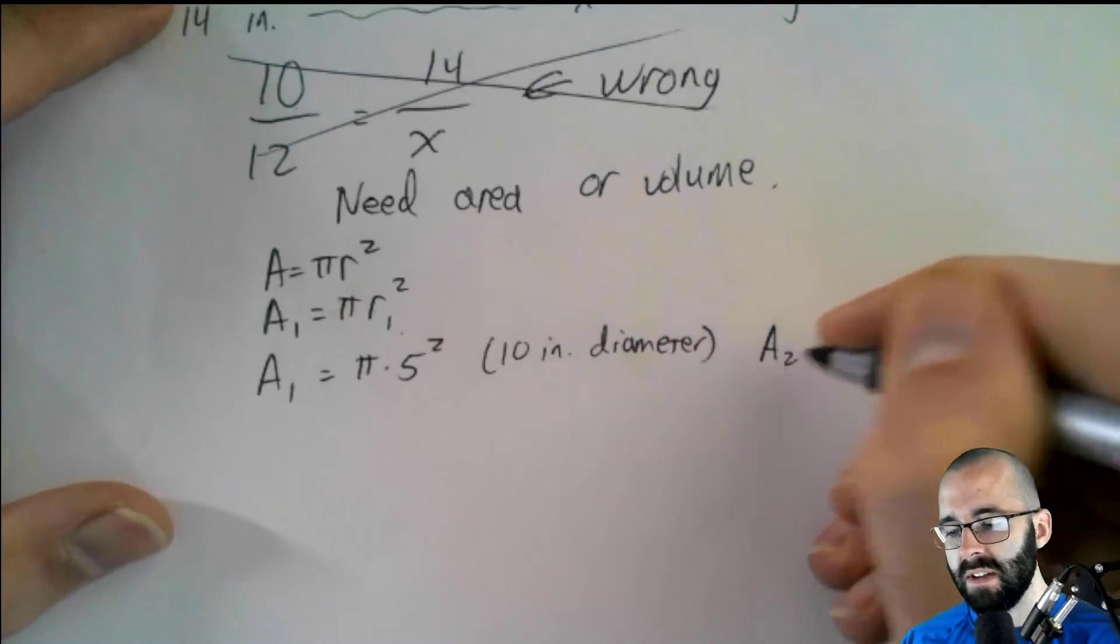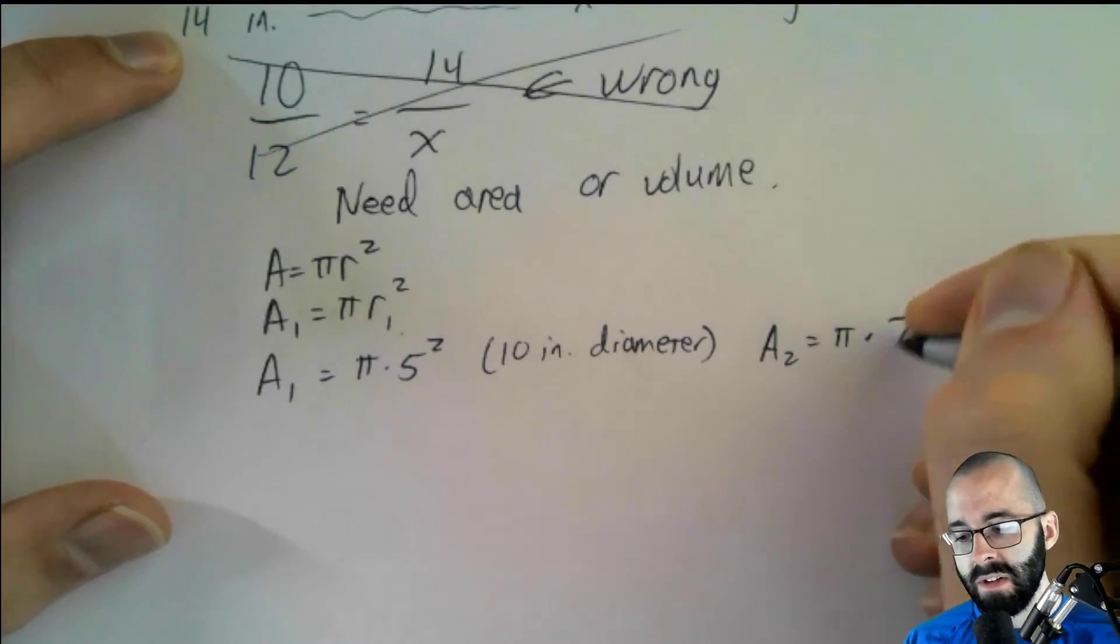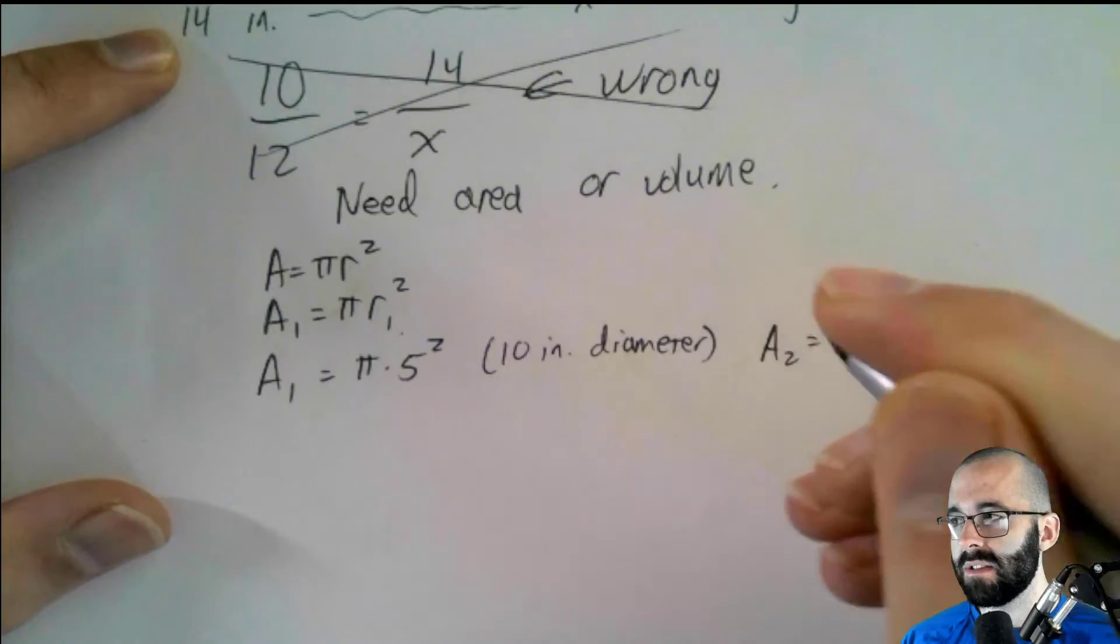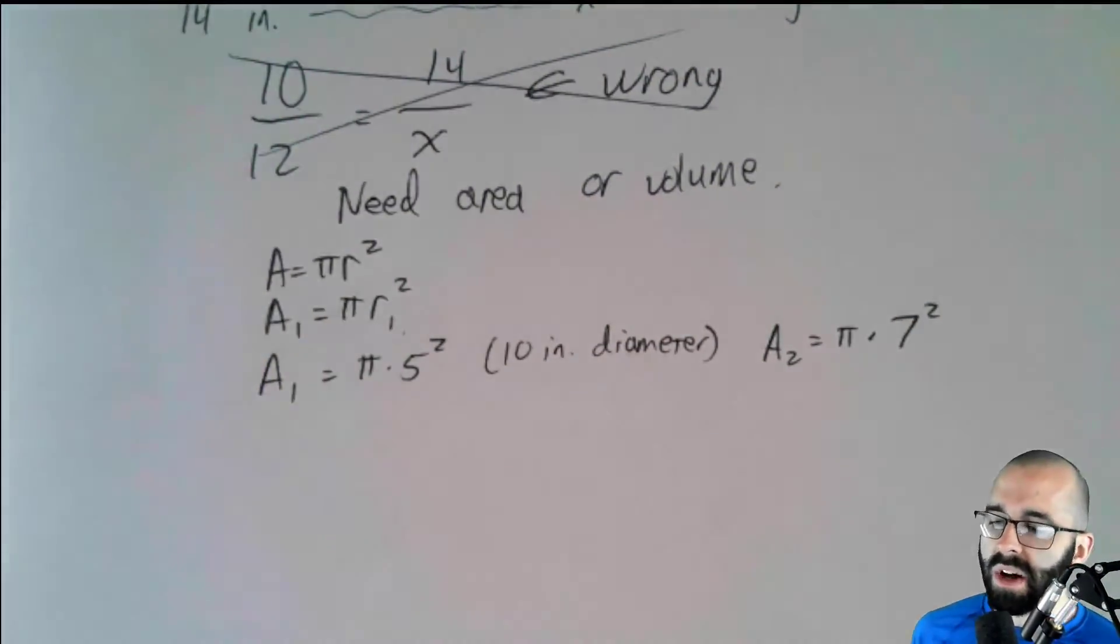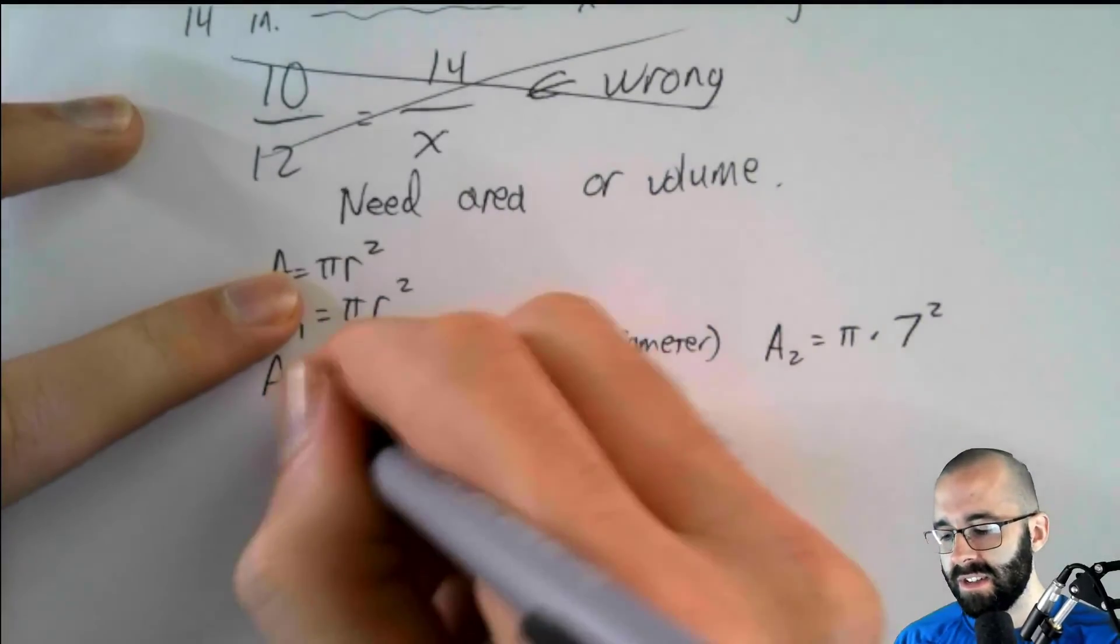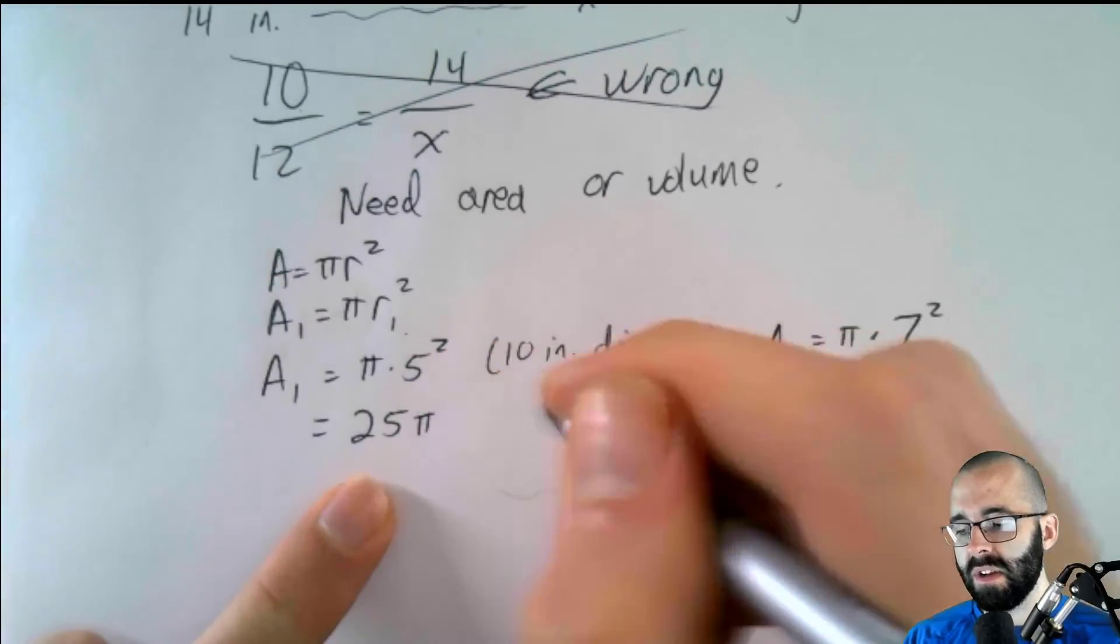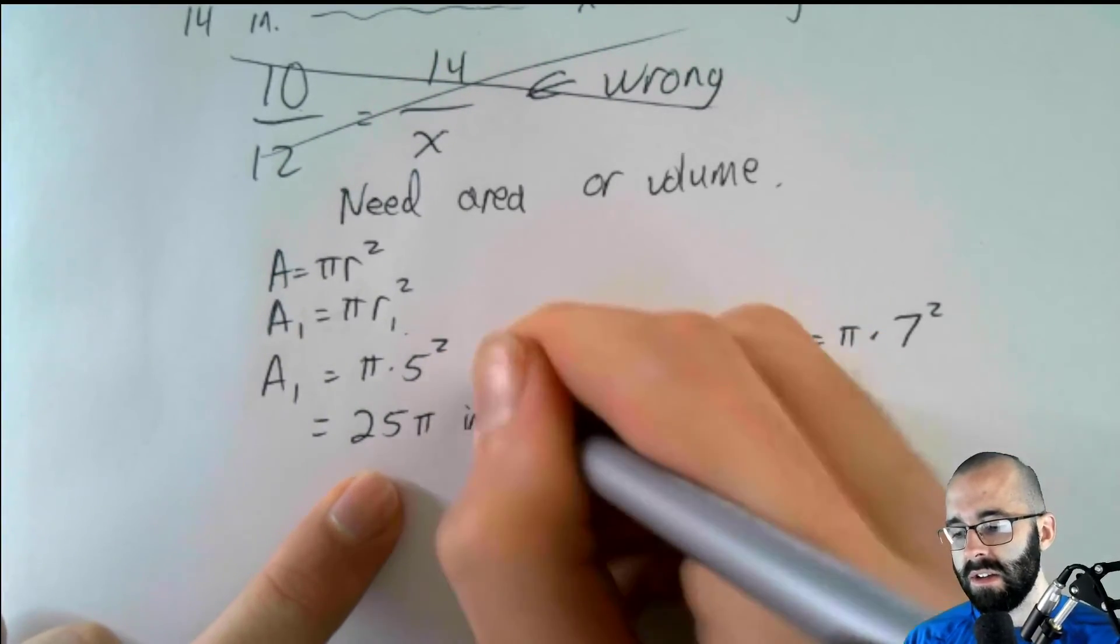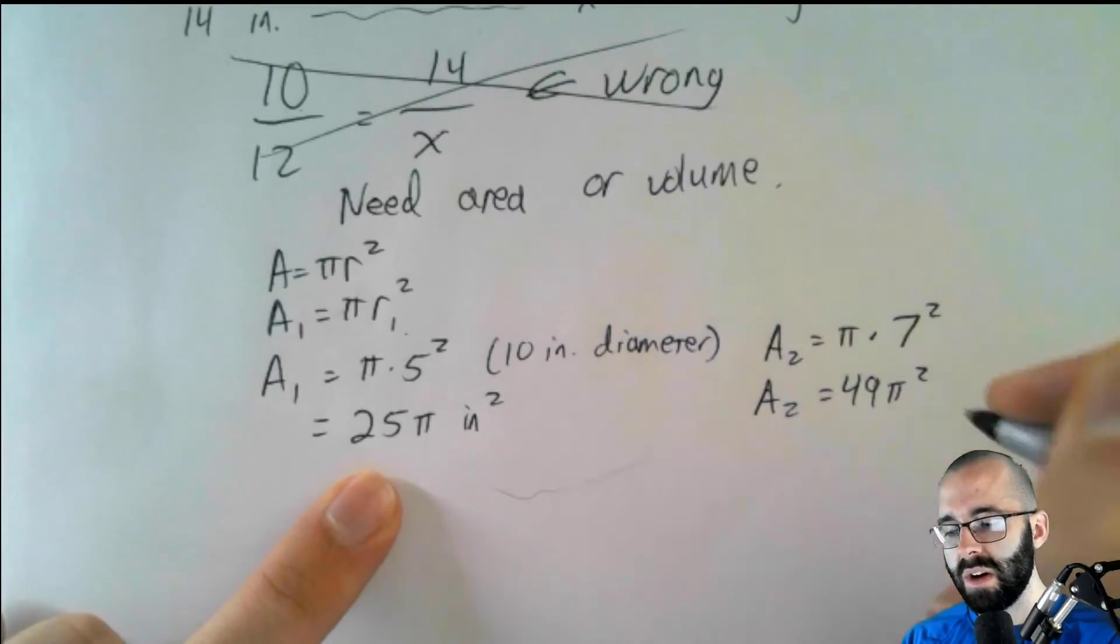And similarly, our second pizza has A2 equals pi times 14 inch diameter is a 7 inch radius. Okay, so you can either approximate or use exact answers here. Using an exact answer here is actually better. Or you can approximate. I don't have a preference. But I'm just going to use the exact answer here. 25 pi inches squared. And A2 equals 49 pi inches squared.